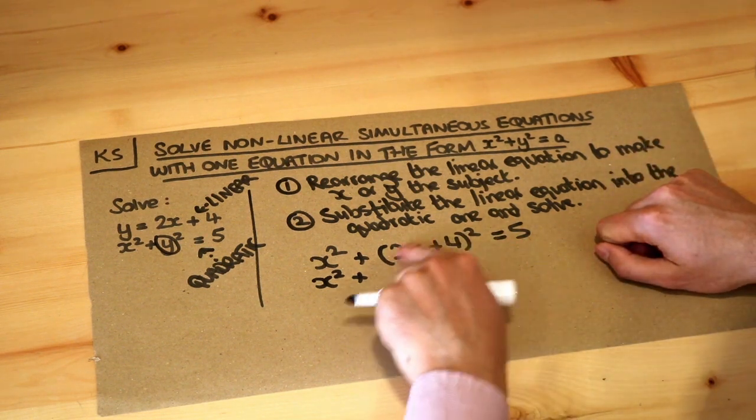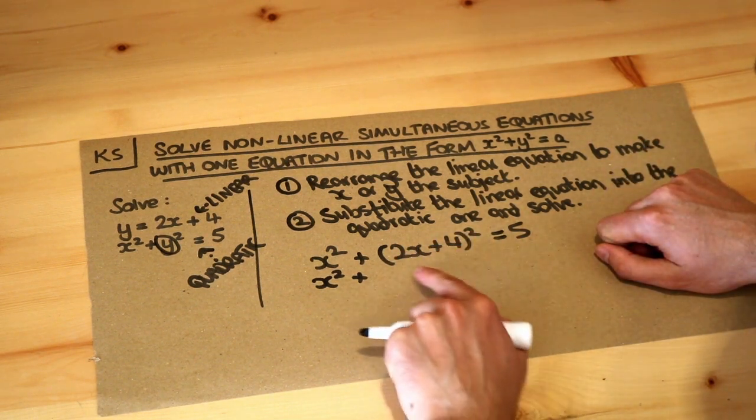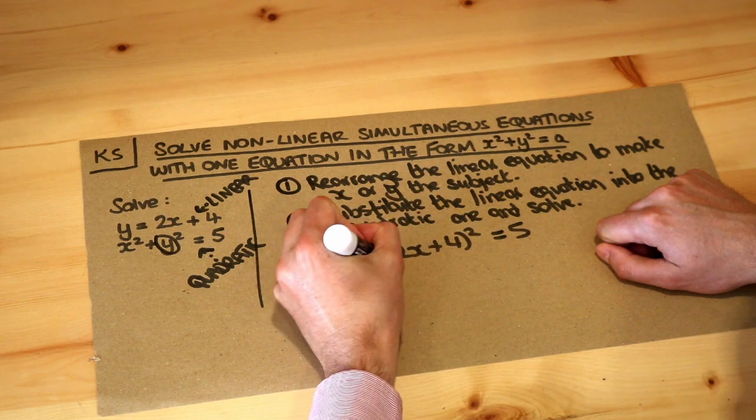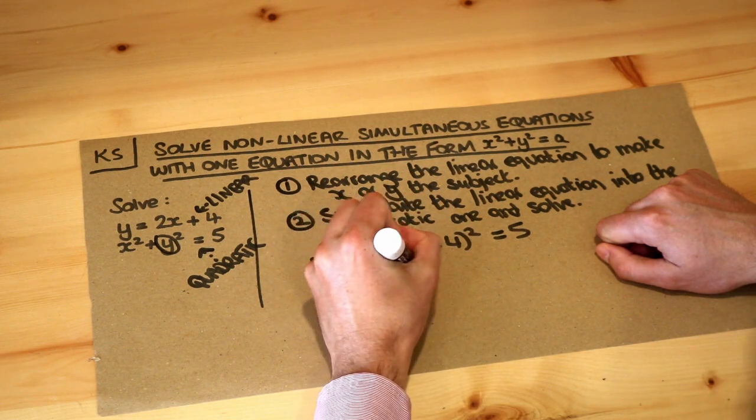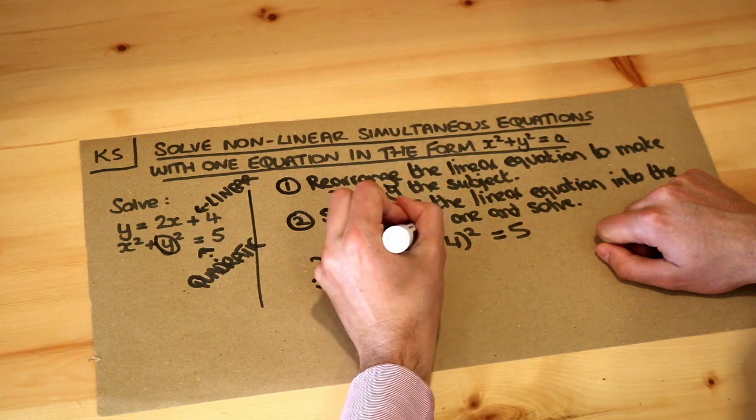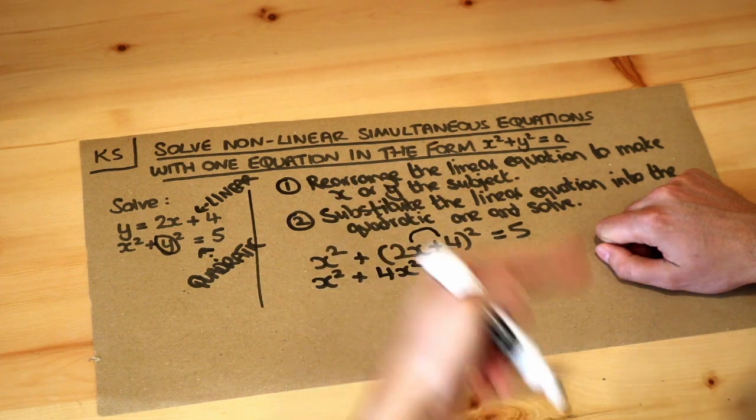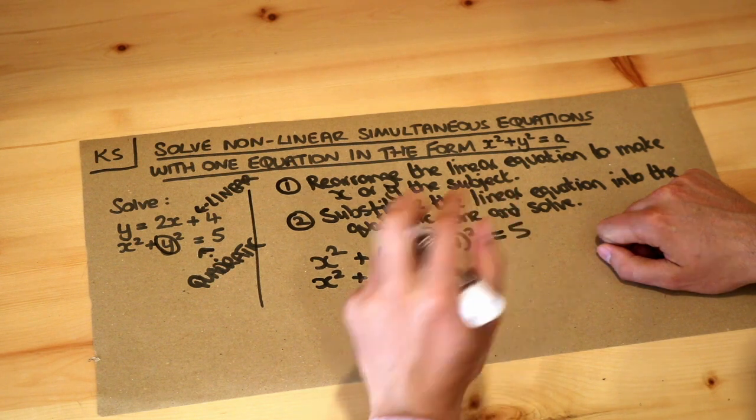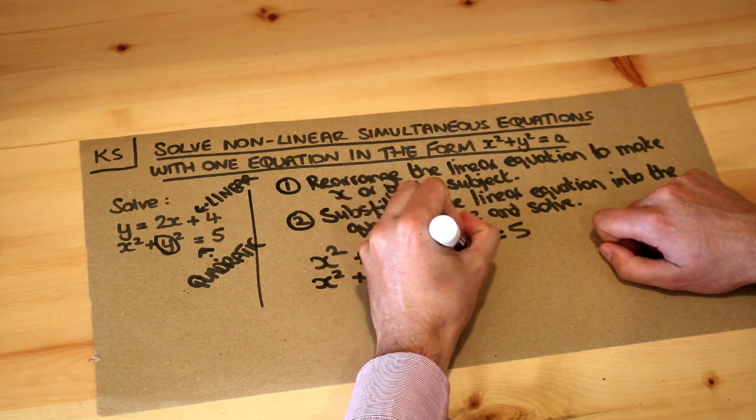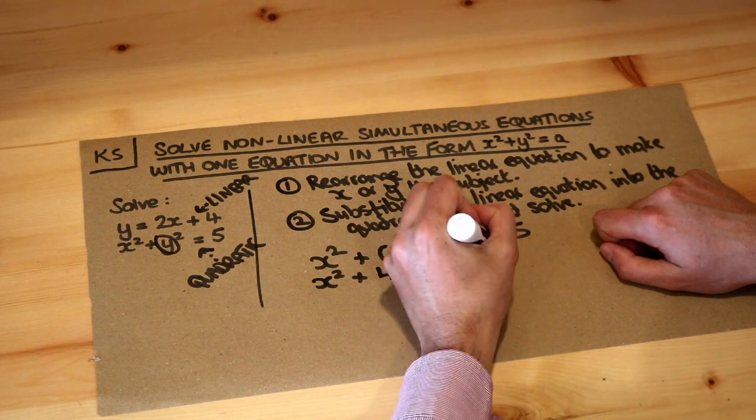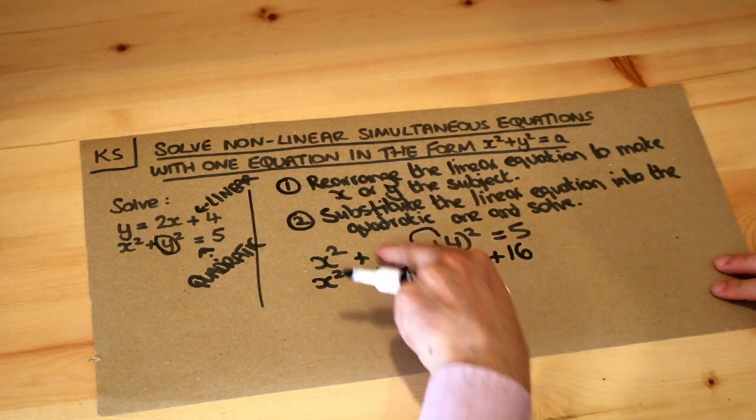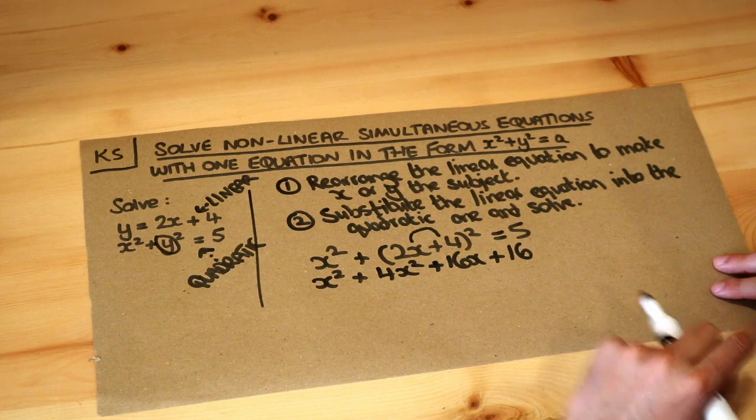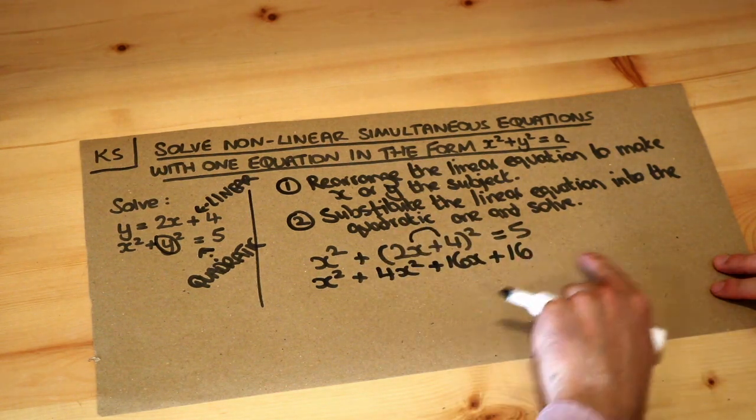Do you remember the quick way to expand a bracket squared when you have two things in it? You do the first thing squared, so 2x times 2x is 4x squared. Then you do the product of the two things doubled, so 2x times 4 is 8x, doubled is 16x. And then you do the second thing squared, so 4 squared is 16.